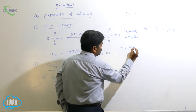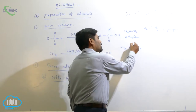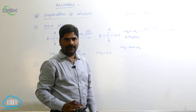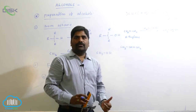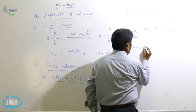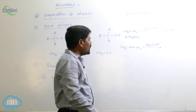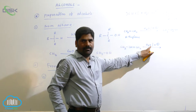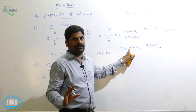Now consider CH3-CH=CH2 — when we draw a line through it, both parts are different, so this is an unsymmetrical alkene. Since water is an unsymmetrical reagent and the alkene is also unsymmetrical, we have to follow Markovnikov's rule. Markovnikov's rule states that when an unsymmetrical alkene reacts with an unsymmetrical reagent, nucleophilic addition always takes place at the double-bonded carbon atom that contains fewer hydrogens.